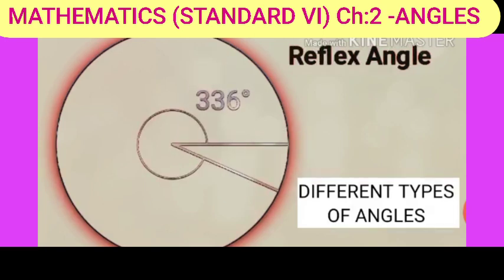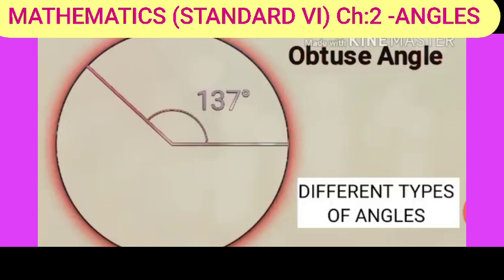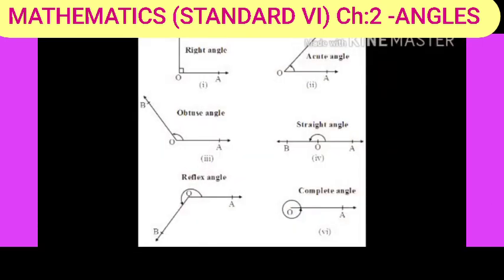Now, see how the arms are moving like that. It changes the measurement of its angles. So, if it is more than 90 degrees, it is known to be obtuse angle. Now, let us see the types of angles.